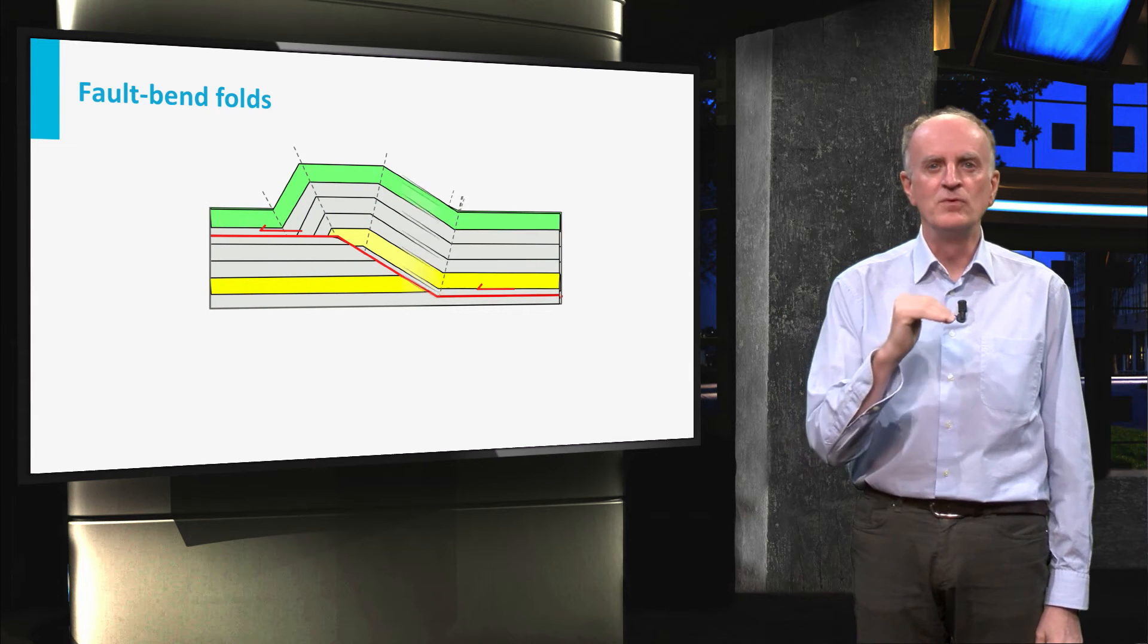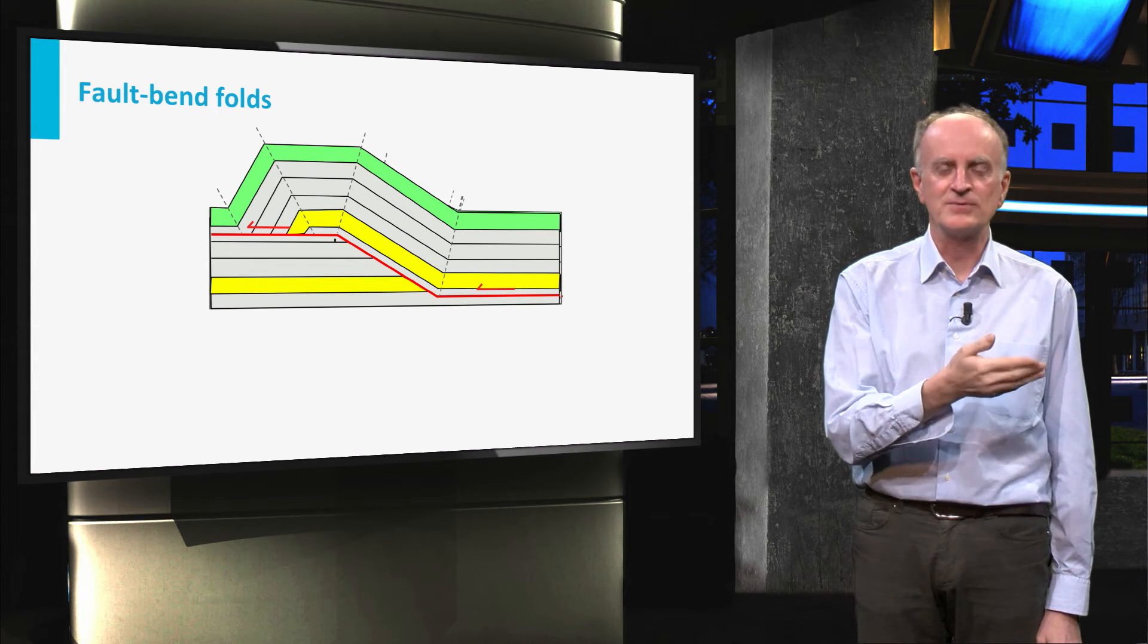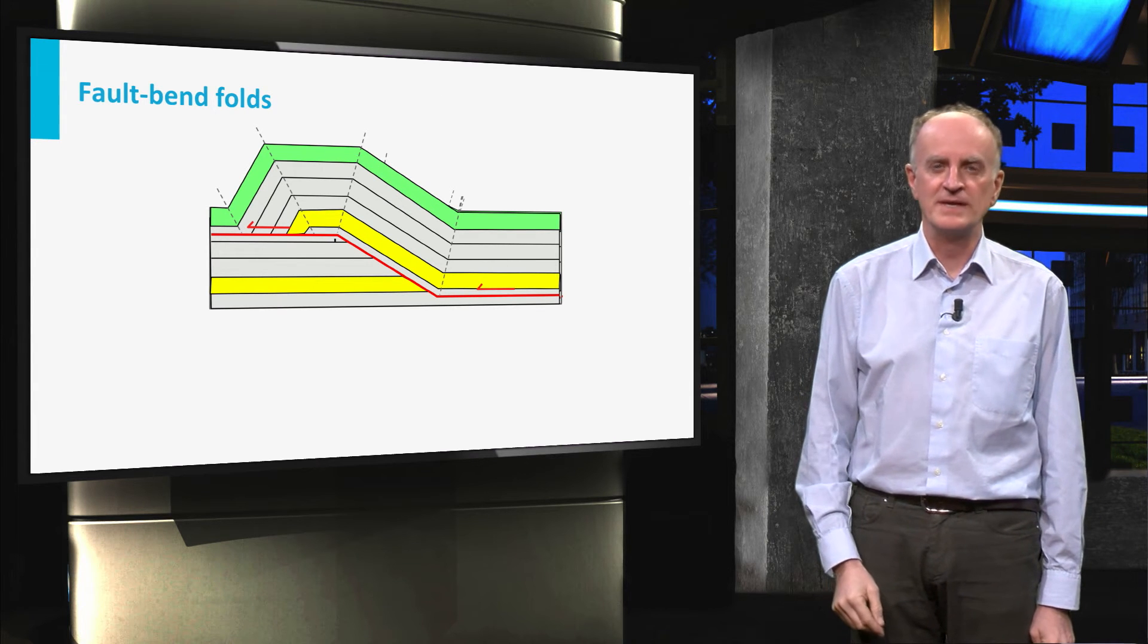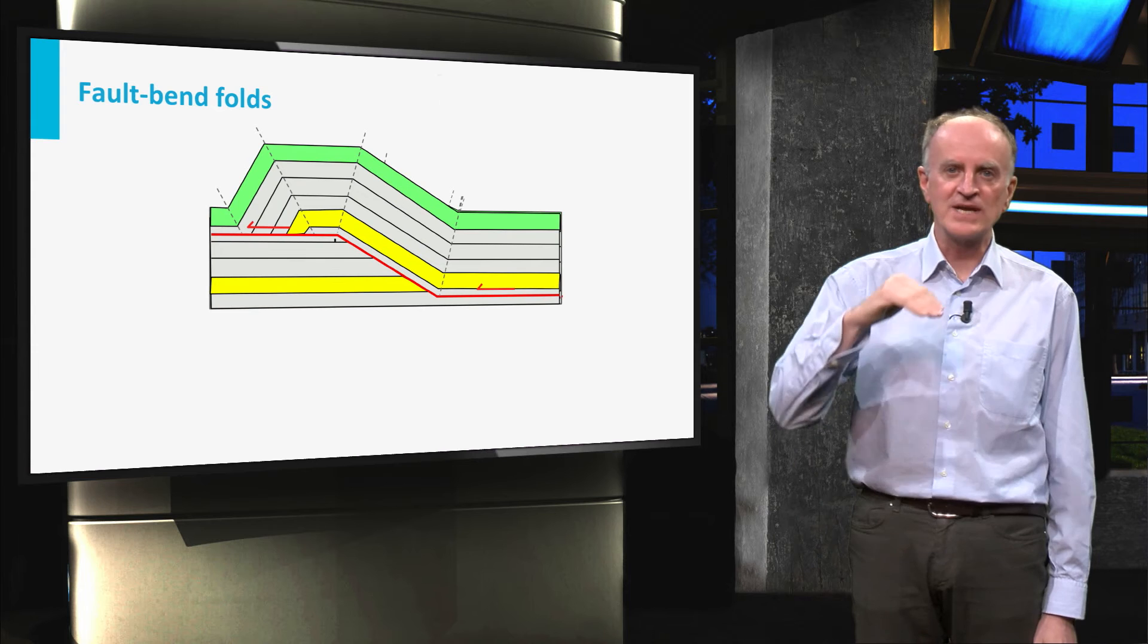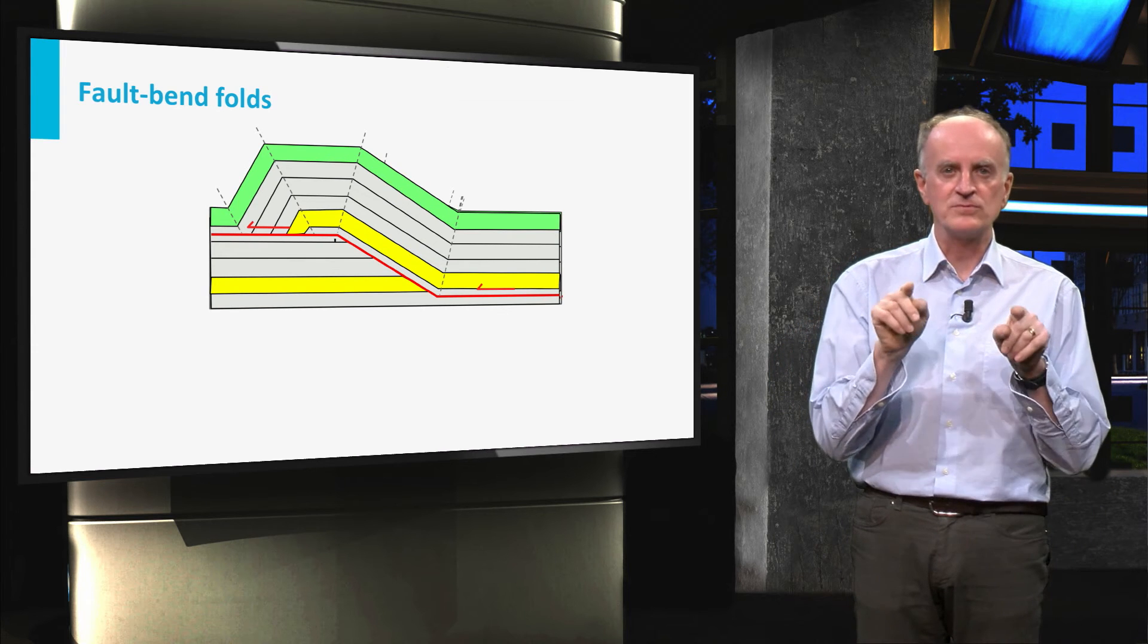the hanging wall moving up along the fault will have to adapt to the non-flat geometry of the fault, thereby creating a large anticline flanked by two smaller synclines.